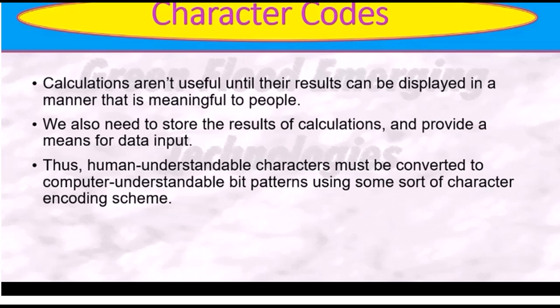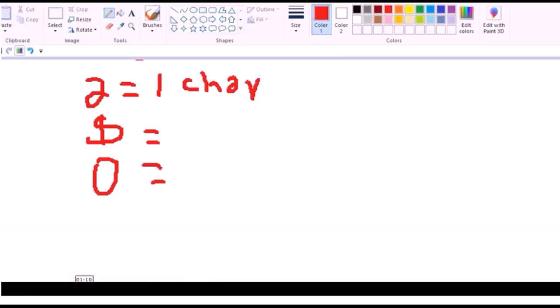So this character encoding is simply any symbol — whether a letter A, a dollar sign, a number, or anything — any symbol is a character. So how can we encode this character? There are different mechanisms.